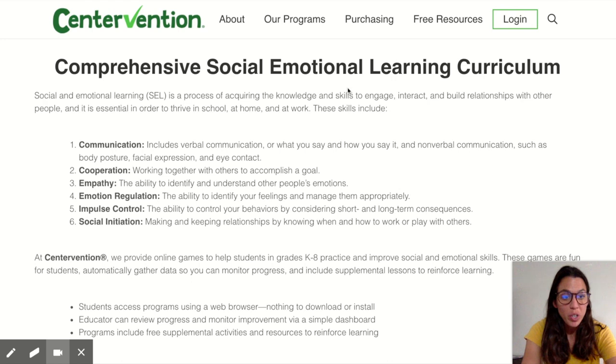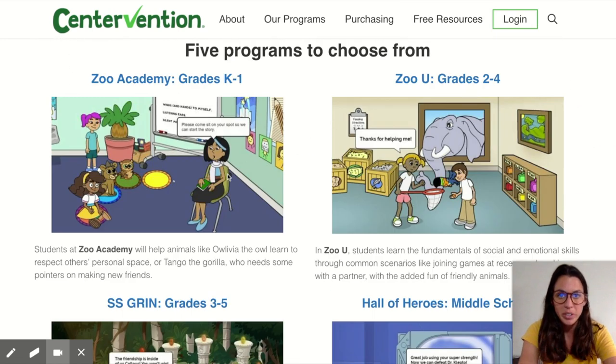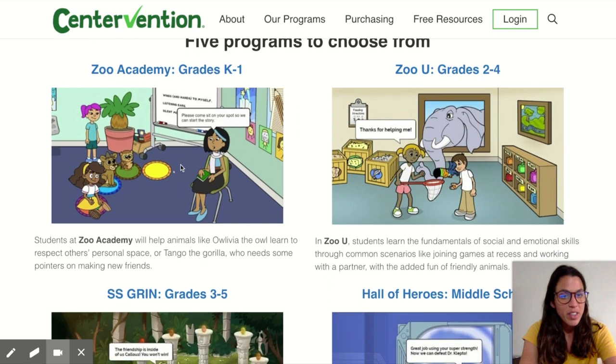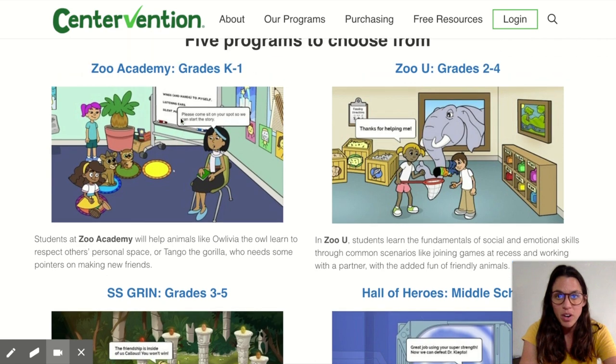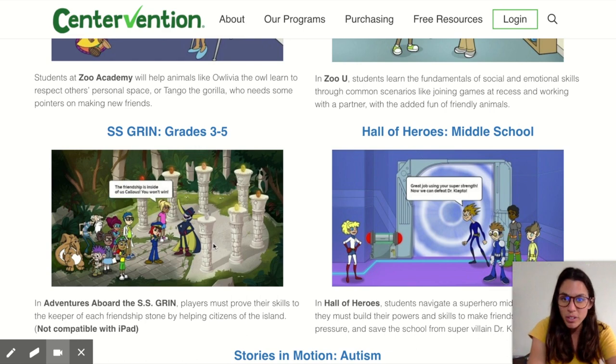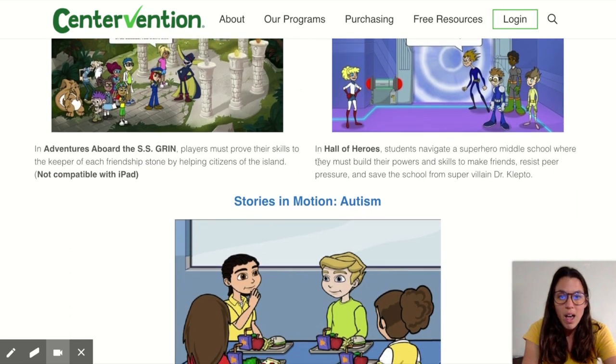The free resources that they have to offer, as well as their other programs. So as you can see, they have five different games to choose from depending on the age of your student or child. They have programs for kindergartners, second graders. Zoo U is what I played with a third grader and she loved it. They have middle school games as well as they have a game designed specifically for students with autism.